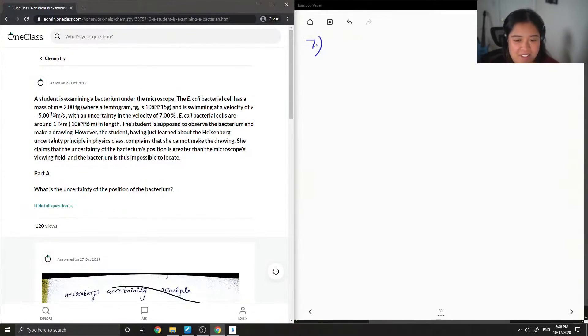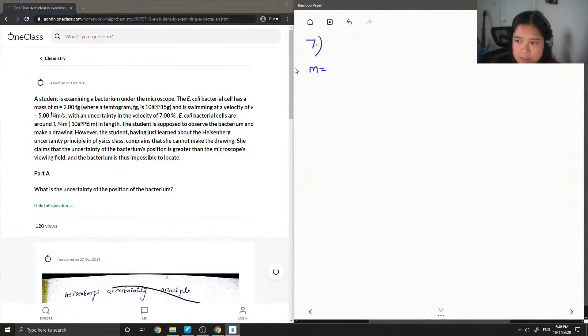What is the uncertainty of the position of the bacterium? Okay, so let's just write down everything that we know so far. We know the mass of the bacterium, 2.00 femtograms, but I'm just going to convert that to grams, like what they did as well.